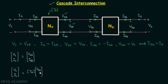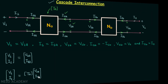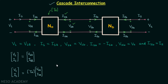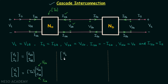In the case of T parameters, the convention is that the output current leaves the two-port network, but here current I2a is entering the network, so we put a negative sign. Since V2a is equal to V1b, we replace V2a with V1b, and since I2a equals negative of I1b, minus I2a becomes I1b.